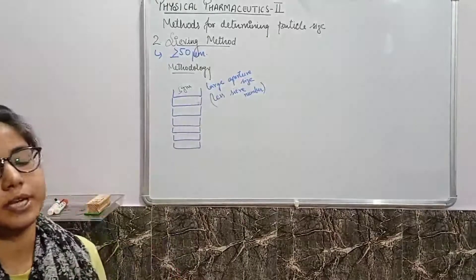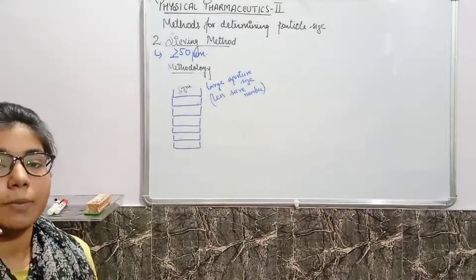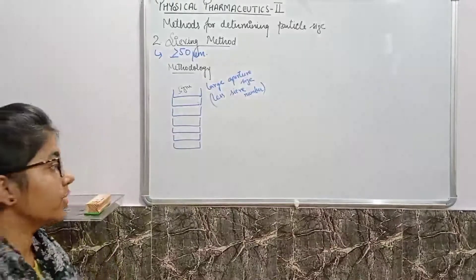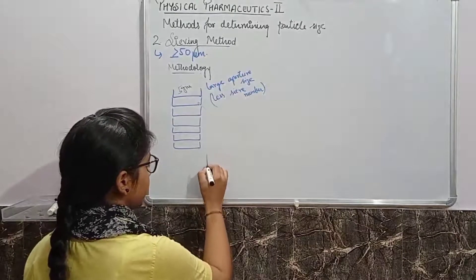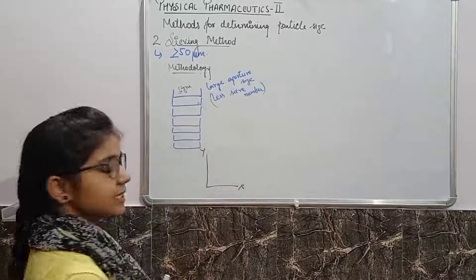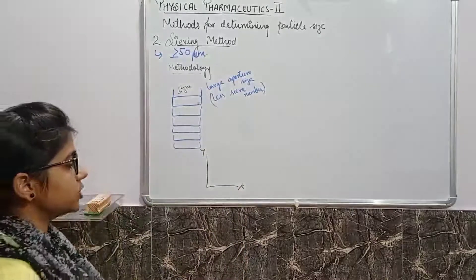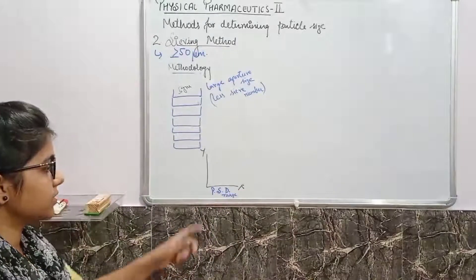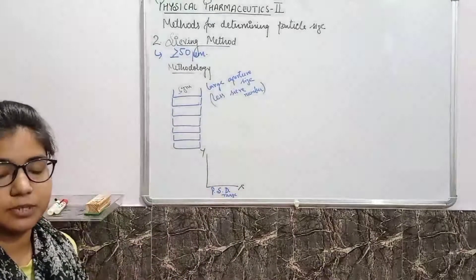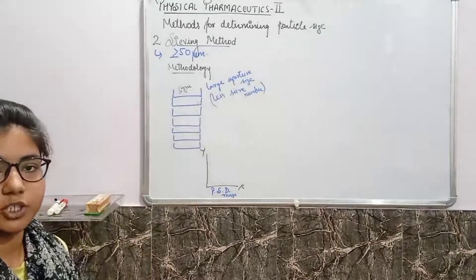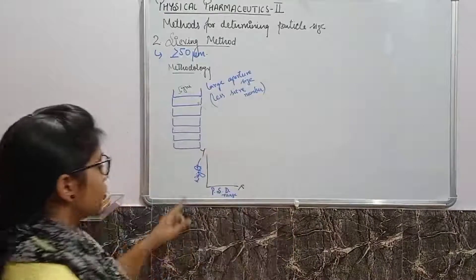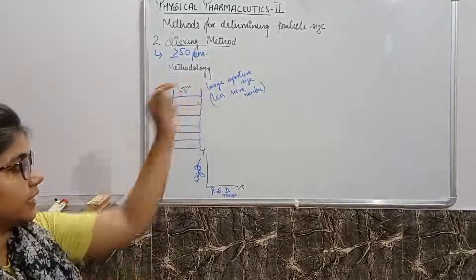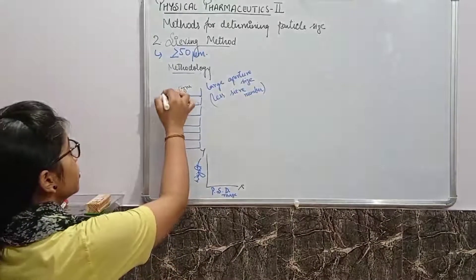After shaking, a certain amount of powder or sample will be retained on each particular sieve. After that, you have to make a particle size distribution curve, but this time on the basis of weight. On the x-axis you mention the particle size, and on the y-axis you mention the weight.